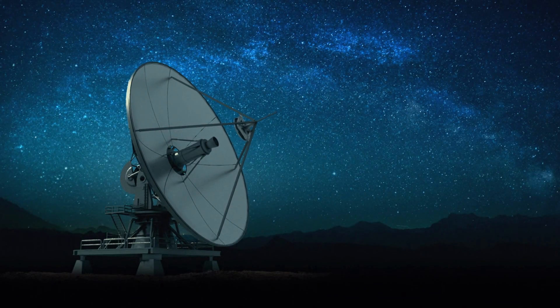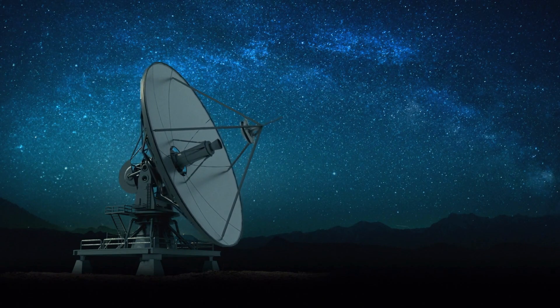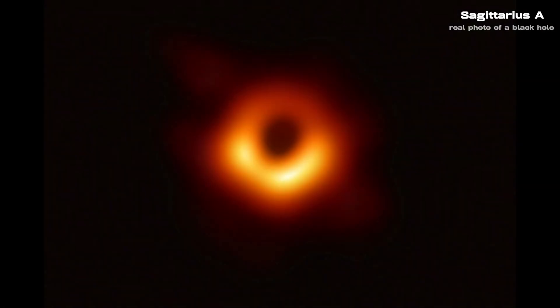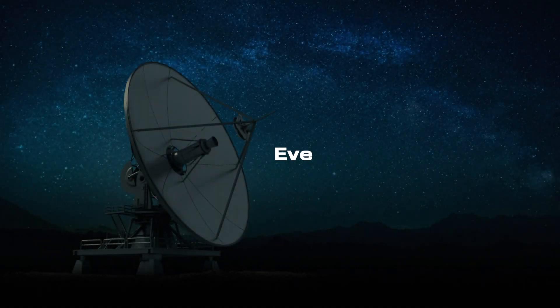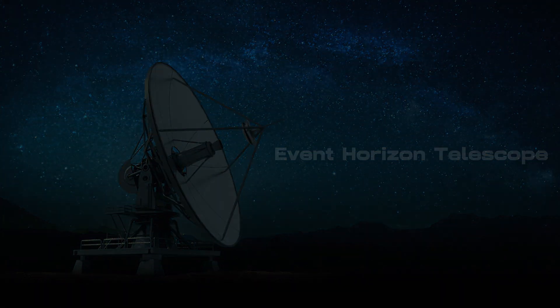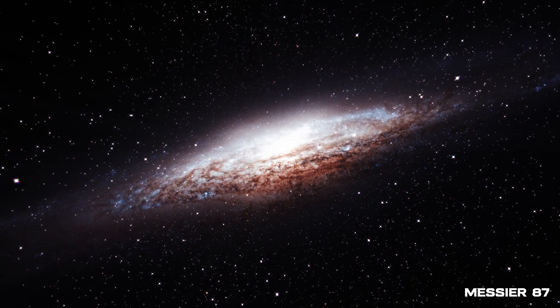Now let's discuss a monumental achievement in astrophysics, the first photograph of a black hole. The name of the black hole is Sagittarius A. In April 2019, the Event Horizon Telescope Collaboration released an image of the supermassive black hole at the center of the galaxy M87.